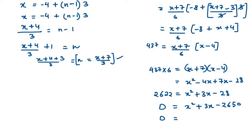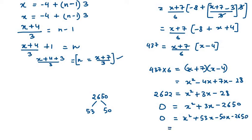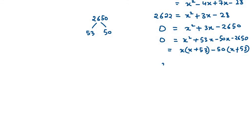Now we split the middle term using factors of 2650 that give a difference of 3. Using 53 and 50: x squared plus 53x minus 50x minus 2650. Taking x common from the first two terms gives x(x plus 53), and taking 50 common from the last two terms gives minus 50(x plus 53). So we get two values: x equals 50 and x equals minus 53.